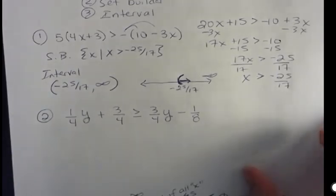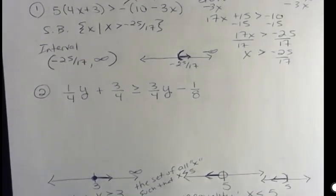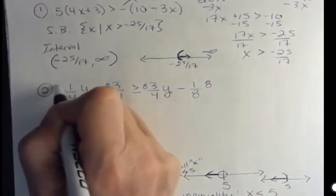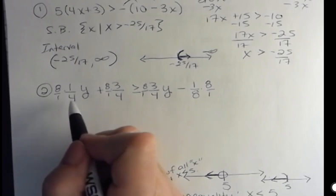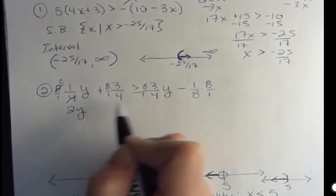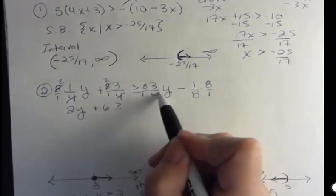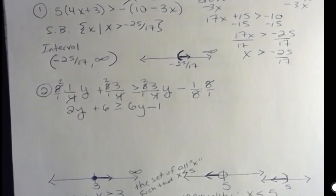Number two is in there because it has fractions, and everybody likes to see practice on that. The least common denominator in this inequality is eight. If you look at all our different denominators, I would multiply everything times eight. Four goes into eight twice, so I get two y. Four goes into eight twice, so I get two times three, or six. Four goes into eight twice, two times three is six y, and the eights cancel, giving me one. So there's my equation — all I had to do was multiply by the LCD, which in this case was eight.